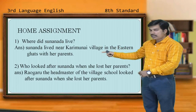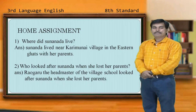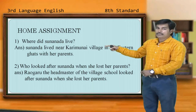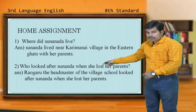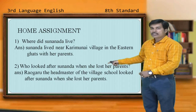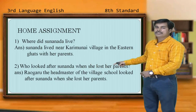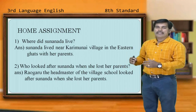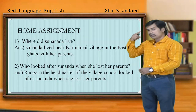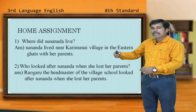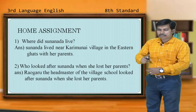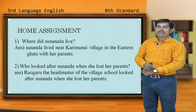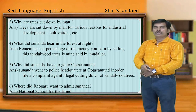See the second question: Who looked after Sunanda when she lost her parents? This is a very interesting question. Ravgaru, the headmaster of the village, looked after Sunanda when she lost her parents. When there was a big explosion, everybody passed away and Sunanda lost her parents and her eyesight. She was accompanied by only one — Gugu the dog. Hope you have remembered that.